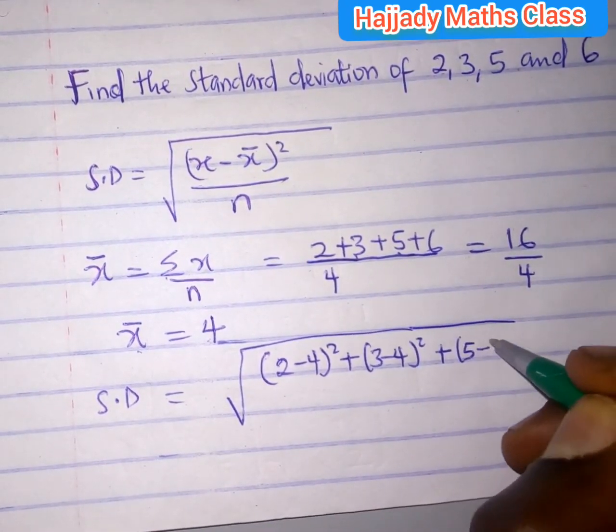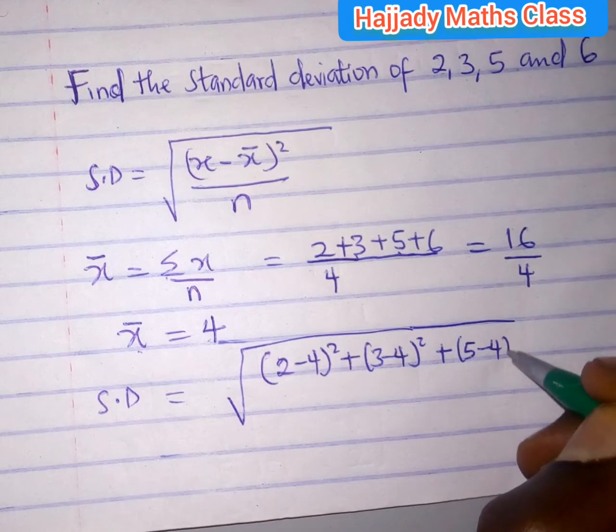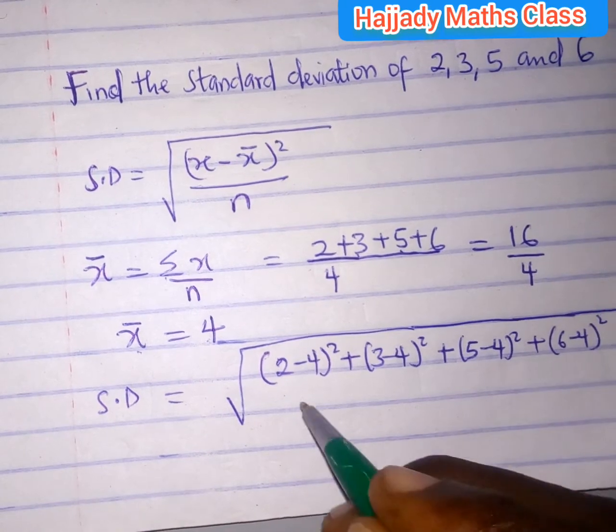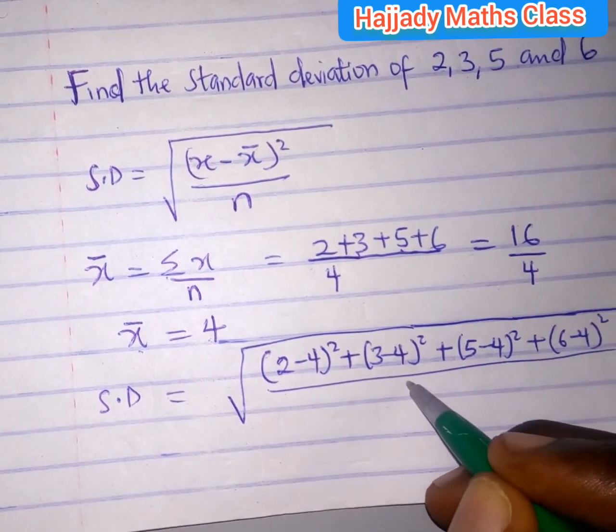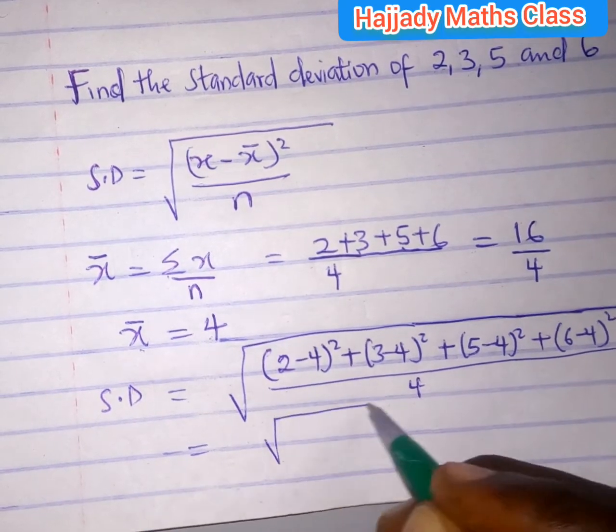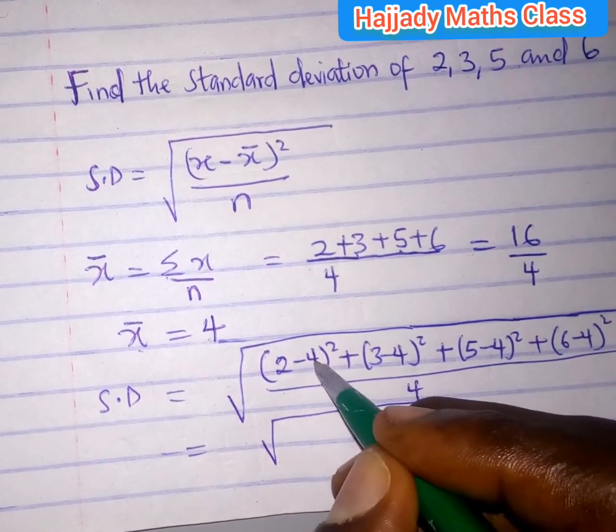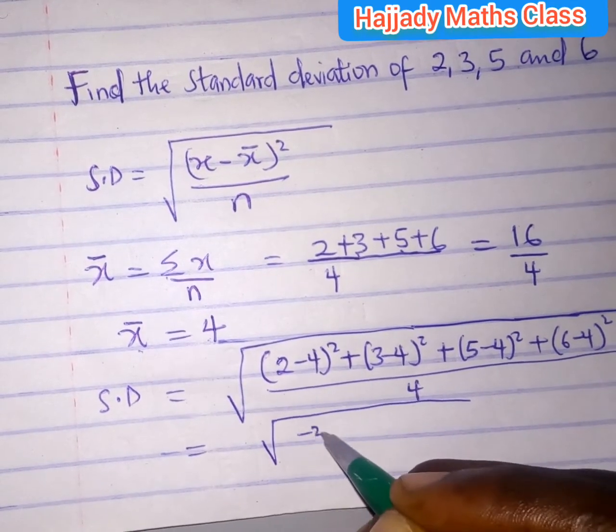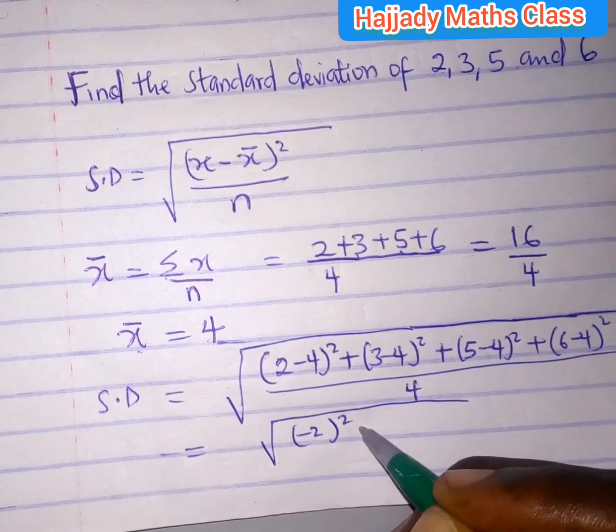So solving this further, we have 2 minus 4 is minus 2, all squared. We have (minus 2) squared, plus (minus 1) squared, plus (1) squared, plus (2) squared, everything all over 4.